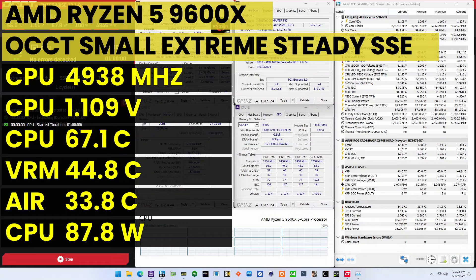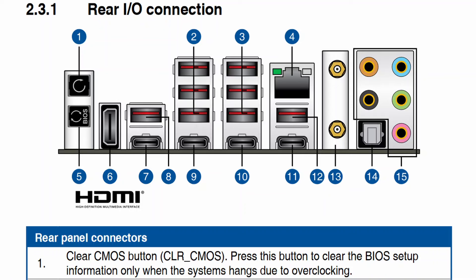We can increase the power limits by using Precision Boost Overdrive, and that's exactly what we'll do in the very first overclocking strategy. Before that, make sure to locate the clear CMOS button. Pressing the clear CMOS button will reset all your BIOS settings to default, which is helpful if you want to start your BIOS configuration from scratch.